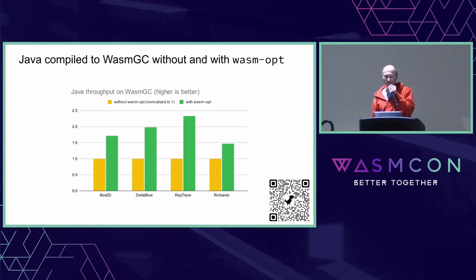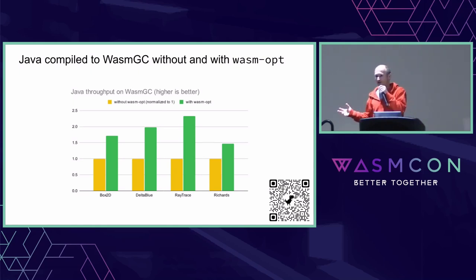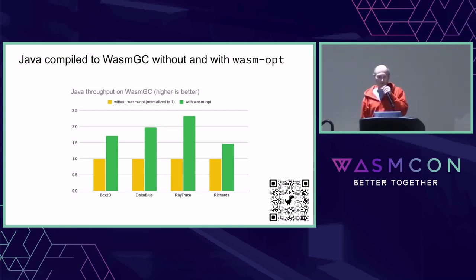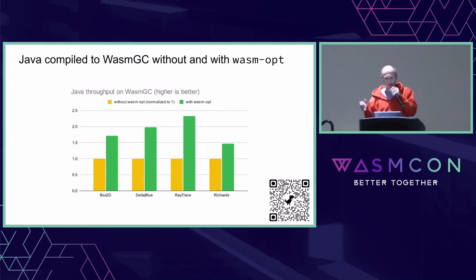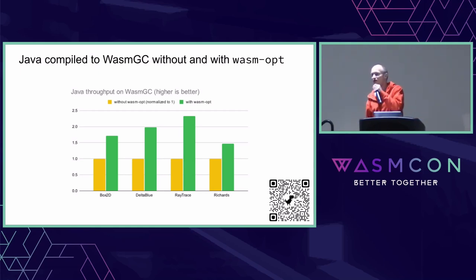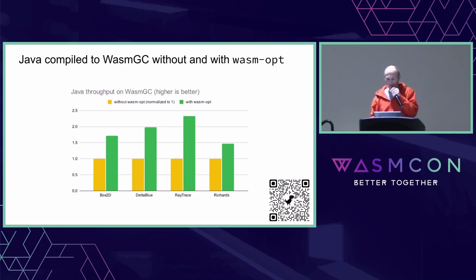A concrete language that benefits from being compiled to Wasm GC is Java. Looking at the final general-level optimization step with wasm-opt: we ran a bunch of Java benchmarks. Normalized to one without optimizations, adding Wasm GC optimizations makes quite a difference — 2x, 1.5x, 1.7x, and so on across different benchmarks. In practice, this holds true and the optimization delivers real speedups.